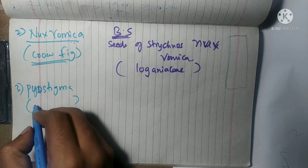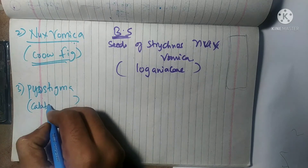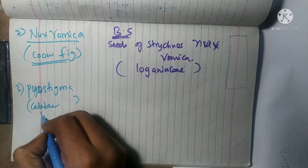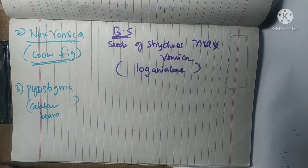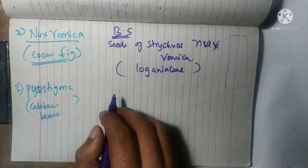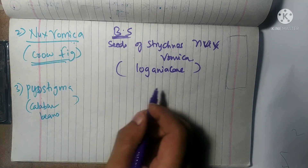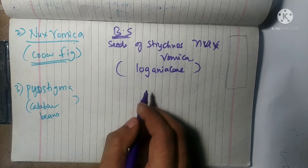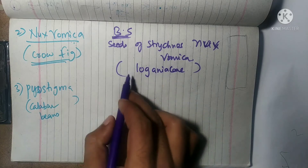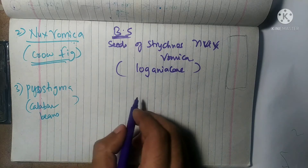Next one is Physostigma. Its synonym includes calabar bean and its biological source — it is obtained from the seeds of Physostigma venenosum. This also belongs to the Loganiaceae family.